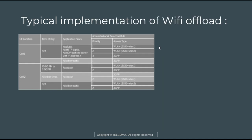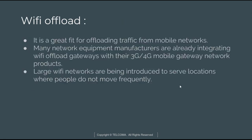Moving to a typical implementation of Wi-Fi offload: the table shows UE location in cell 1 and cell 2, time of day — not applied in some cases and applied for all users in others. Applications include YouTube, HTTP, UDP, and Facebook, with priorities assigned as 1, 2, and 3 respectively — so priority is set per application.